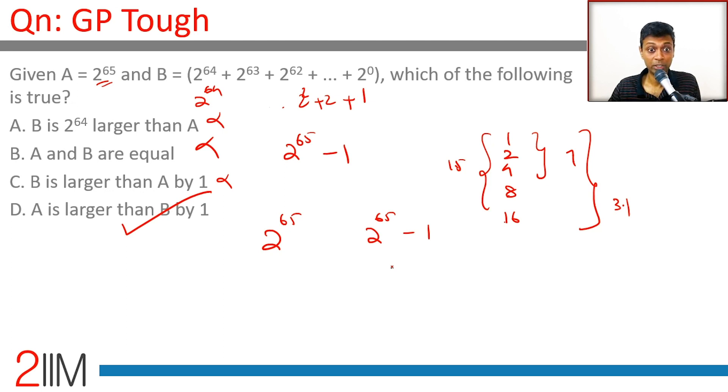Exponents make the numbers leap and jump and go. So 2^65, a single term, is way more than these 64 or 65 terms added together. Keep that in mind, it's a wonderful idea just to tell you about the power of exponents.